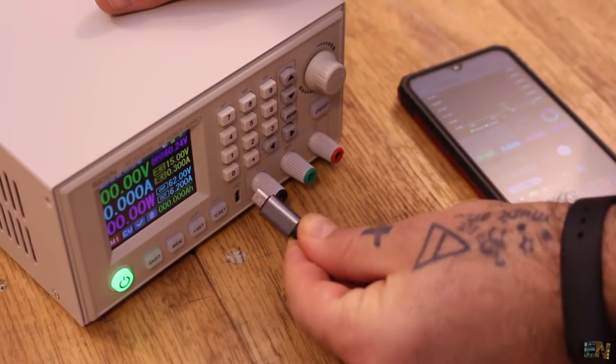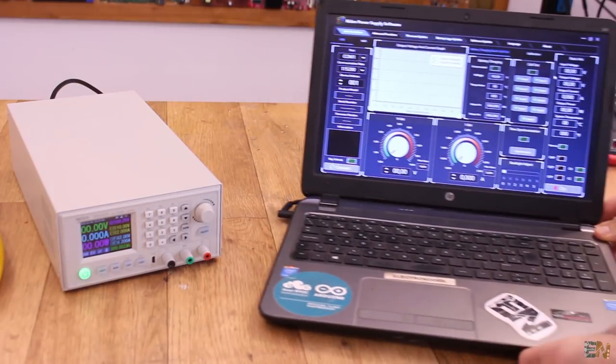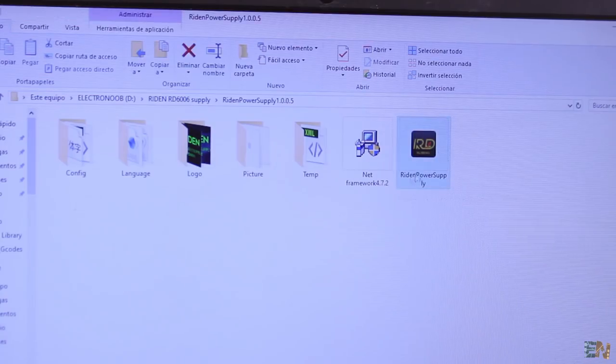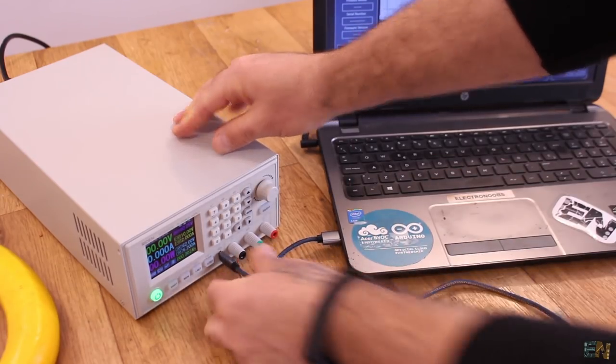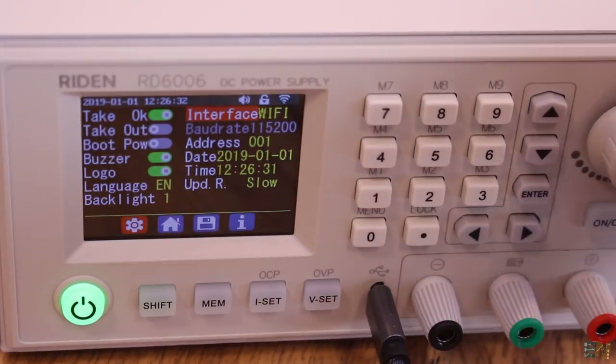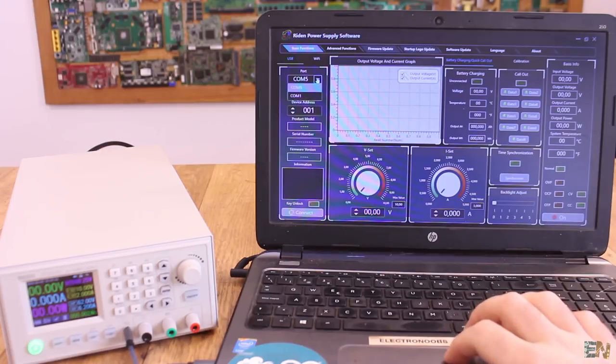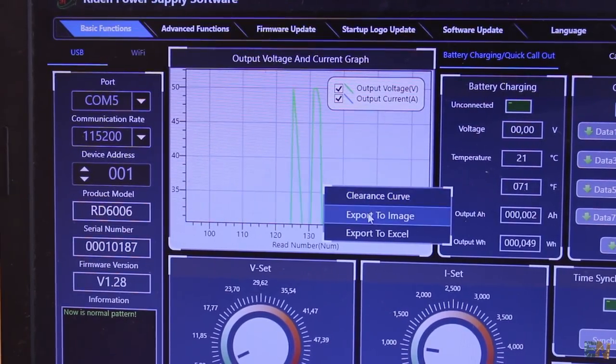You can do the same with the USB connection and the software installed on your PC. So go below and download the software. Install that on your PC. Now connect the USB cable from your PC to the power supply. Then enter the menu and change back the connection mode from WiFi to USB. On the PC software, select the COM and press connect. So now you can control the supply from here. Make screen captures or graphs and so on.